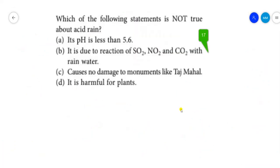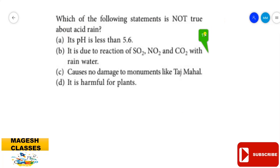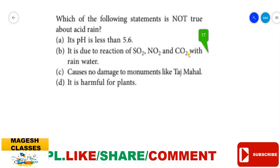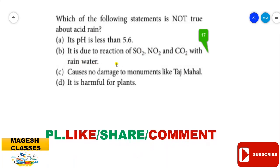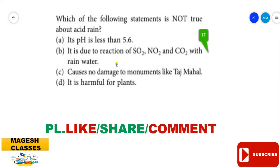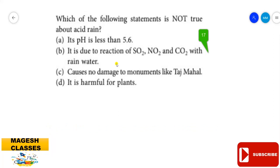Question 17: Which of the following statements is NOT true about acid rain? Statement: its pH is less than 5.6 — correct. Statement: it is due to the reaction of SO₂, NO₂, and CO₂ with rainwater — correct; these pollutants dissolve to give sulfuric acid, nitric acid, and carbonic acid respectively. Statement: it causes no damage to monuments like Taj Mahal — this is a wrong statement.